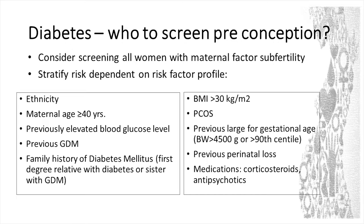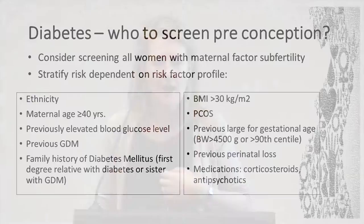Briefly talking about pre-diabetes — it's really good to recognise and treat, so you have to start thinking about screening these women. I would personally consider screening all women who come with maternal factor subfertility, but stratify their risk a little based on other risk factor profiles. Some of the things that identify people as high-risk for GDM — indicating an early OGTT — are actually quite good for preconception as well: ethnicity, older age, previous glucose intolerance, family history, obesity, PCOS. All of these are good indications to help stratify risk and make sure you're screening these women preconception.